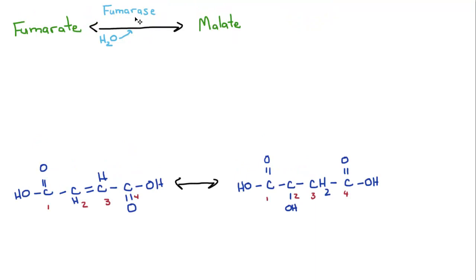The enzyme fumarase is going to combine water with fumarate to form the molecule malate. The hydroxyl group from water is going to attach to the second carbon. The hydrogen from water is going to attach to the third carbon. You see you got rid of that double bond there as well.